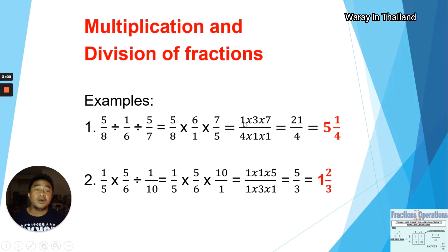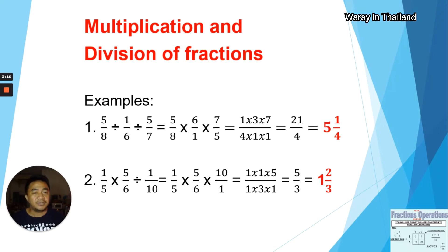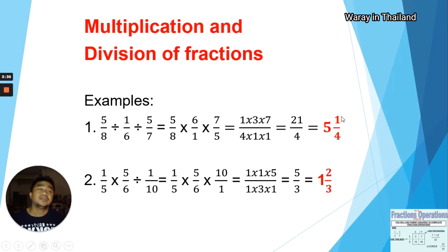Now we multiply: one times three times seven is 21, and four times one times one is four. We have an improper fraction, 21 over four, so we show the final answer as a mixed number. We divide 21 by four — the nearest multiple of four below 21 is 20, which is four times five, with a remainder of one. So 21 over four equals five and one-fourth.